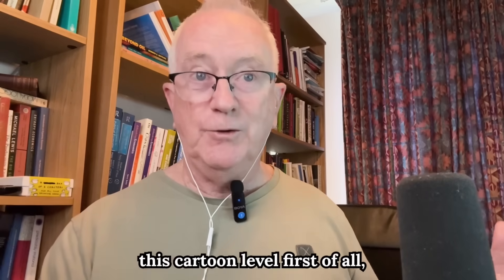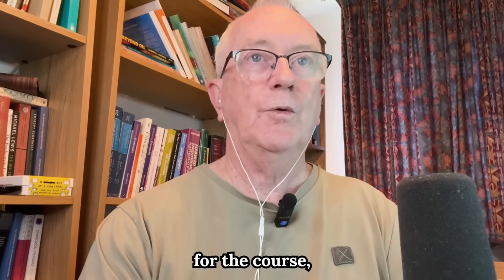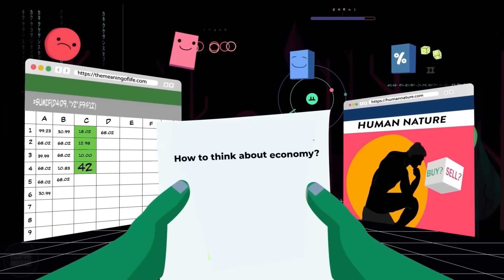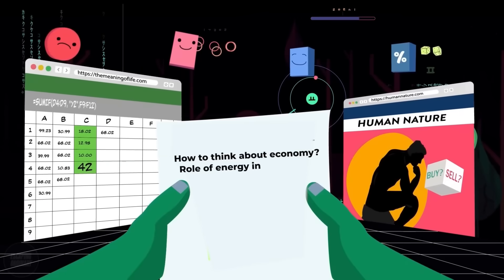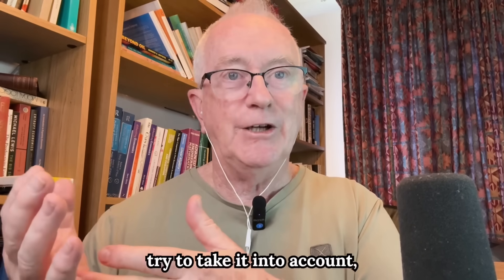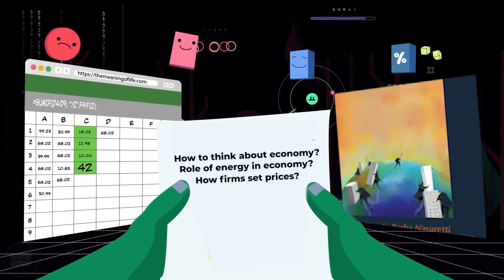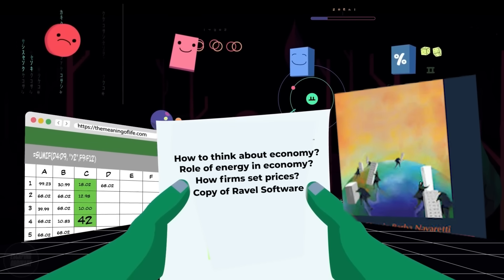If you want to understand this at the cartoon level first and then build up from there, apply to join the online course at stevekeen.com. You'll get a copy straight away. If you do sign up for the course, you'll learn how to think about the economy as it actually is: a dynamic, evolving, monetary system of production — not a pair of intersecting supply and demand curves reaching equilibrium in all markets. You'll also learn about the role of energy in the economy, which mainstream economists completely ignore, and how firms actually set prices — which also has nothing to do with intersecting supply and demand curves. And you'll get a copy of Ravel, the software with which I built these models, so you can build the systems yourself.